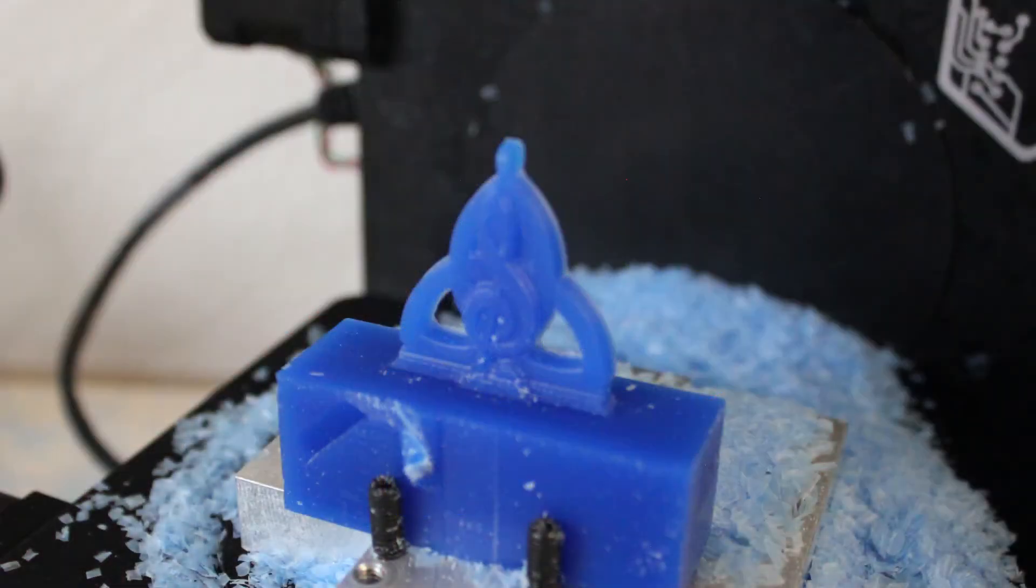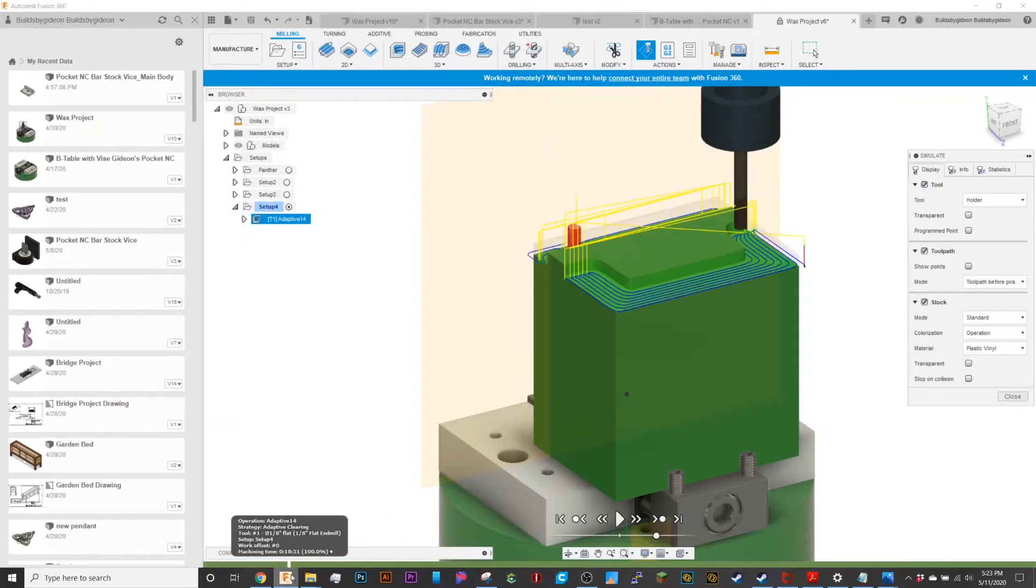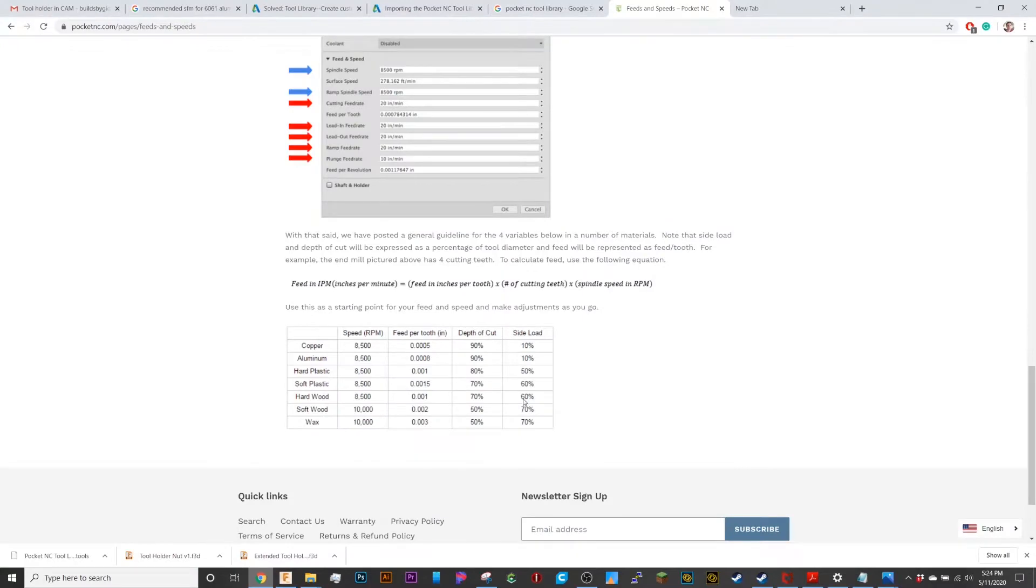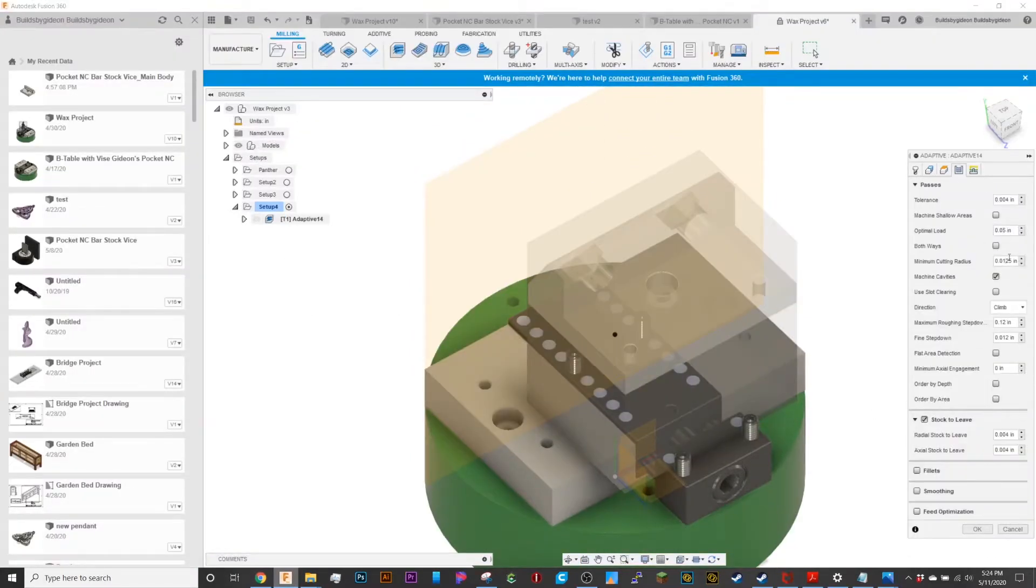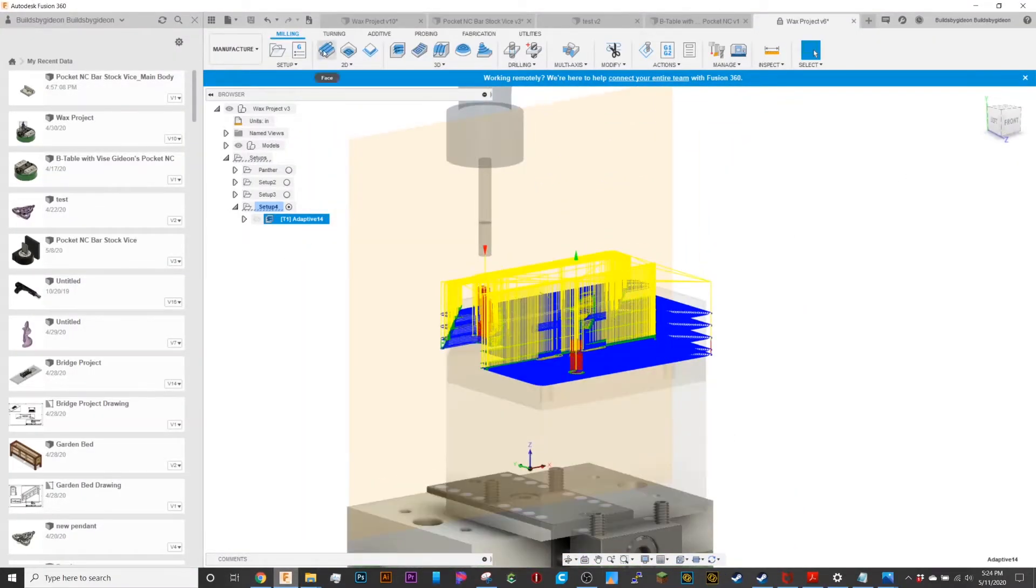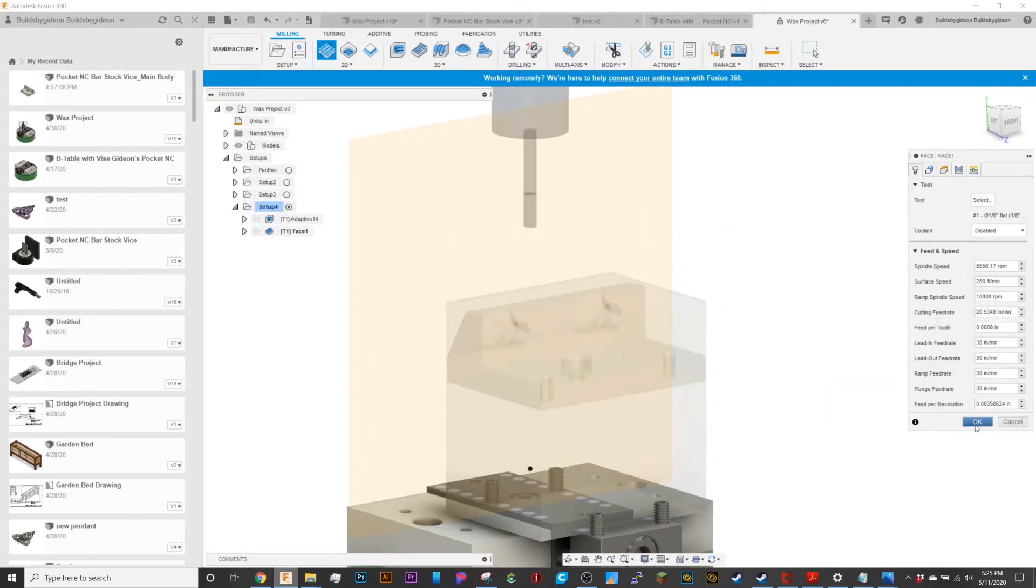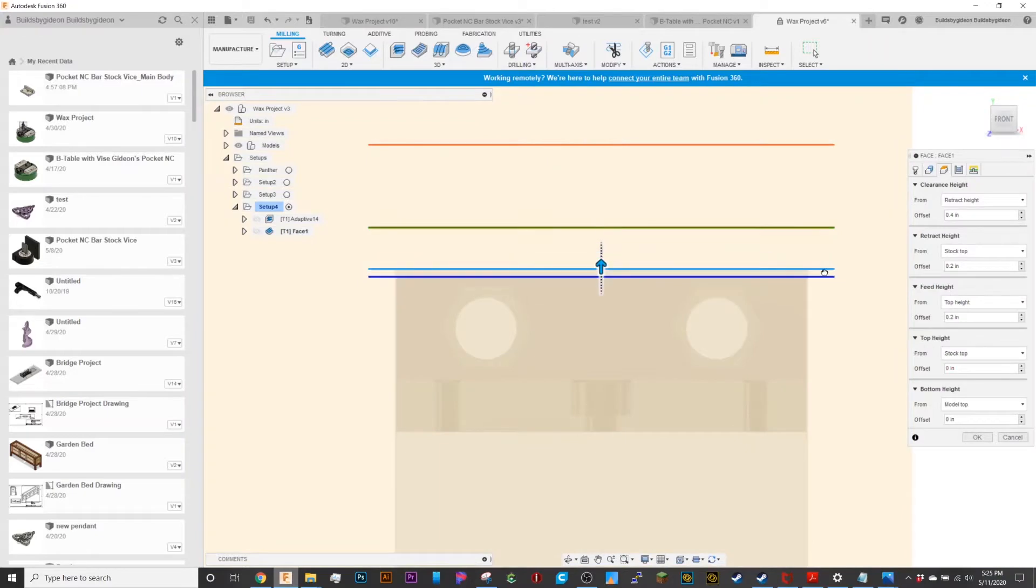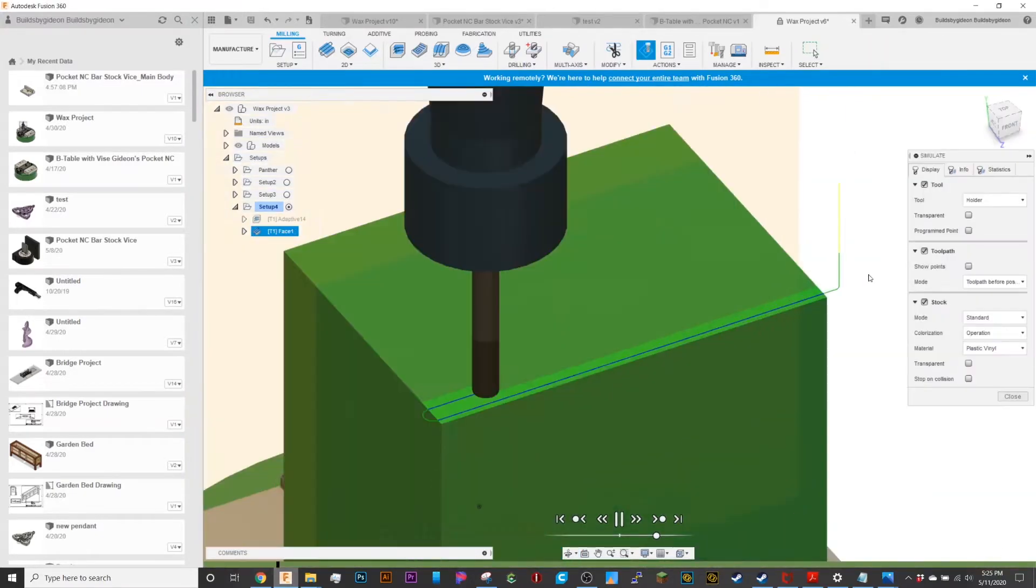I'm doing all this on the Pocket NC, which is a five-axis desktop CNC machine. It's not as powerful as a lot of the other brands, as far as Tormach and Haas machines go, but it still does have quite a bit of power for a machine being smaller than a square foot.